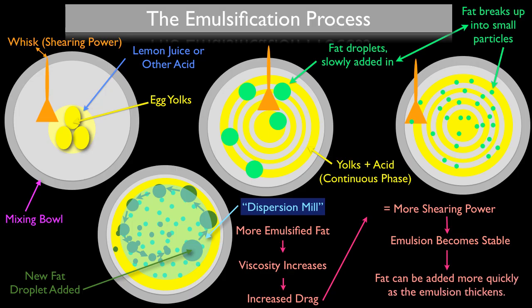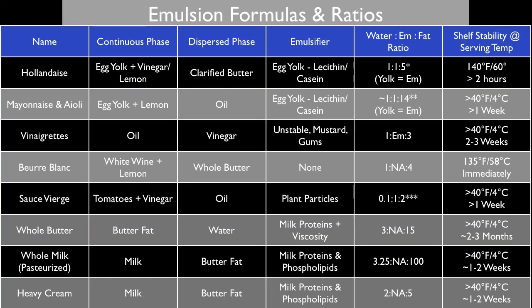Now that we understand the actual emulsification process, let's talk about some emulsion formulas and ratios. This chart will be available for you in the show notes, organized by the name of the sauce or emulsification, continuous phase, dispersed phase, emulsifier, water-to-emulsifier-to-fat ratio, and shelf stability at normal serving temperature. So let's take hollandaise as an example: your continuous phase is going to be egg yolk and vinegar or lemon juice, the dispersed phase is classically clarified butter, and the emulsifiers are the egg yolks — specifically lecithin and casein. The notation here is: yolk equals emulsifier.